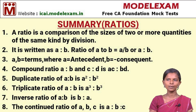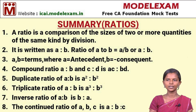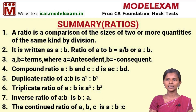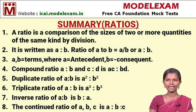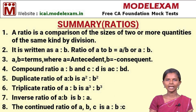The fourth point is compound ratio. The compound ratio of two given ratios can be calculated as follows: if the ratios are A is to B and C is to D, the compound ratio will be AC is to BD. The fifth point is duplicate ratio. Duplicate ratio of A is to B is A squared is to B squared.